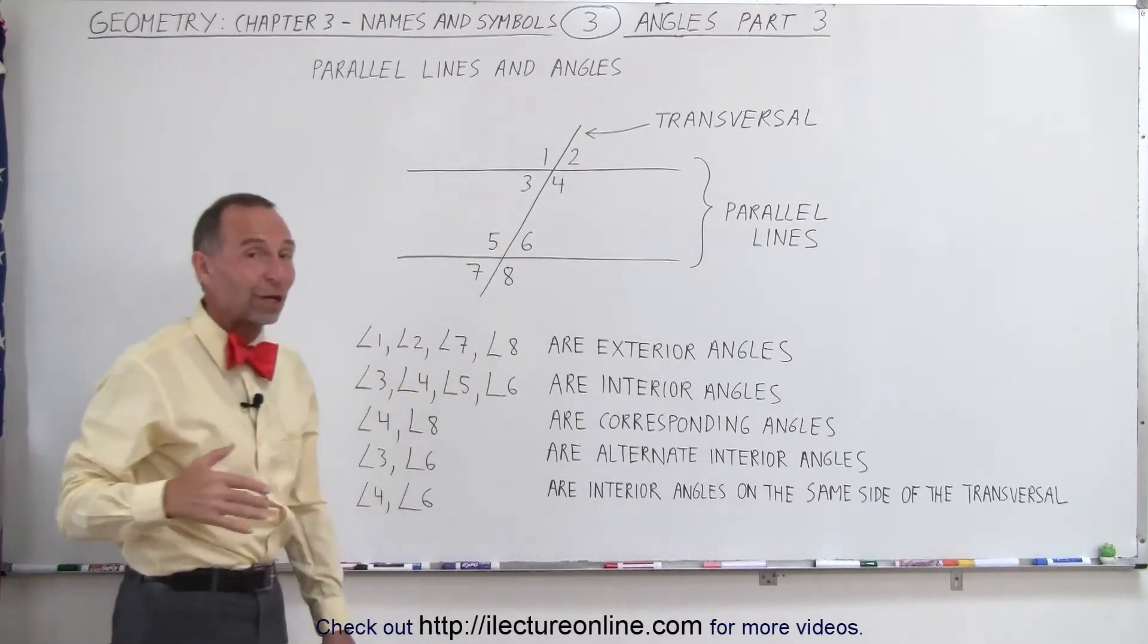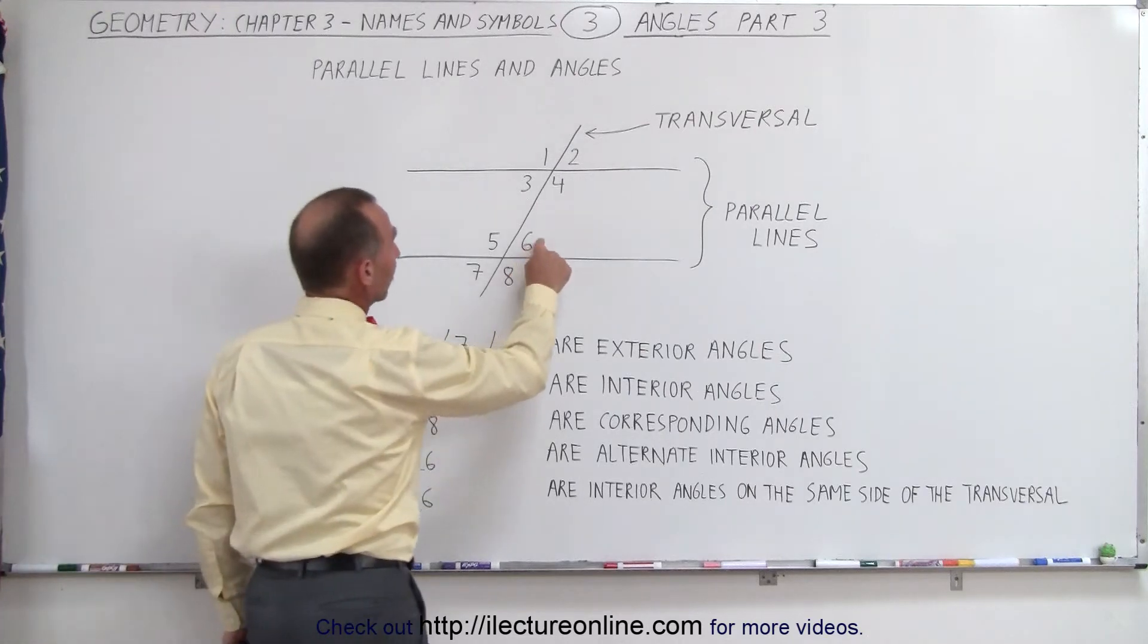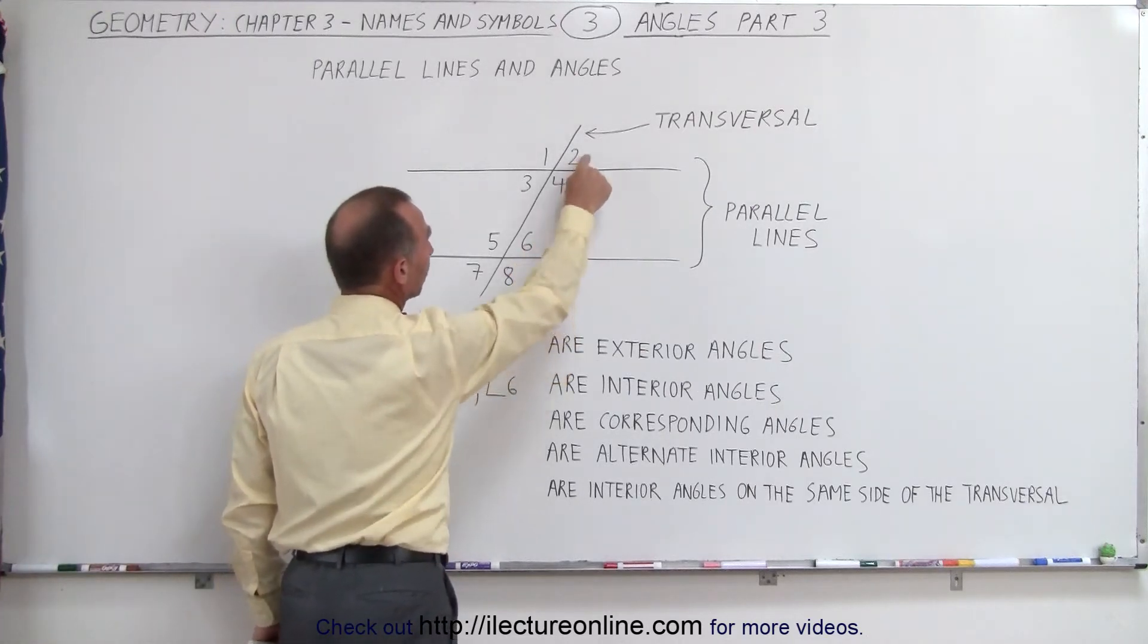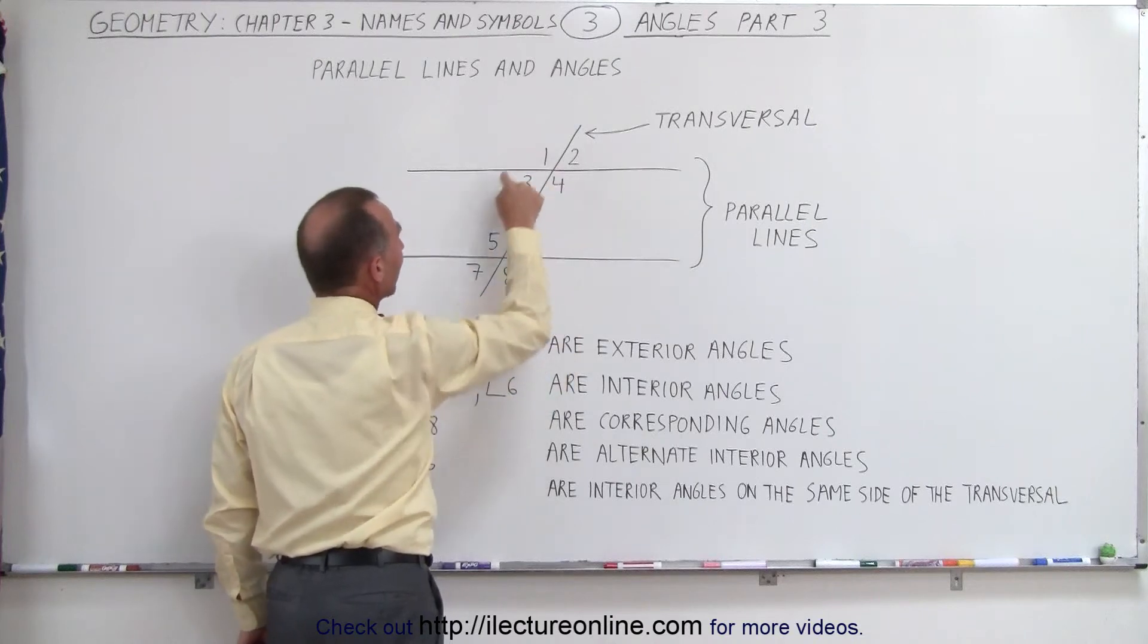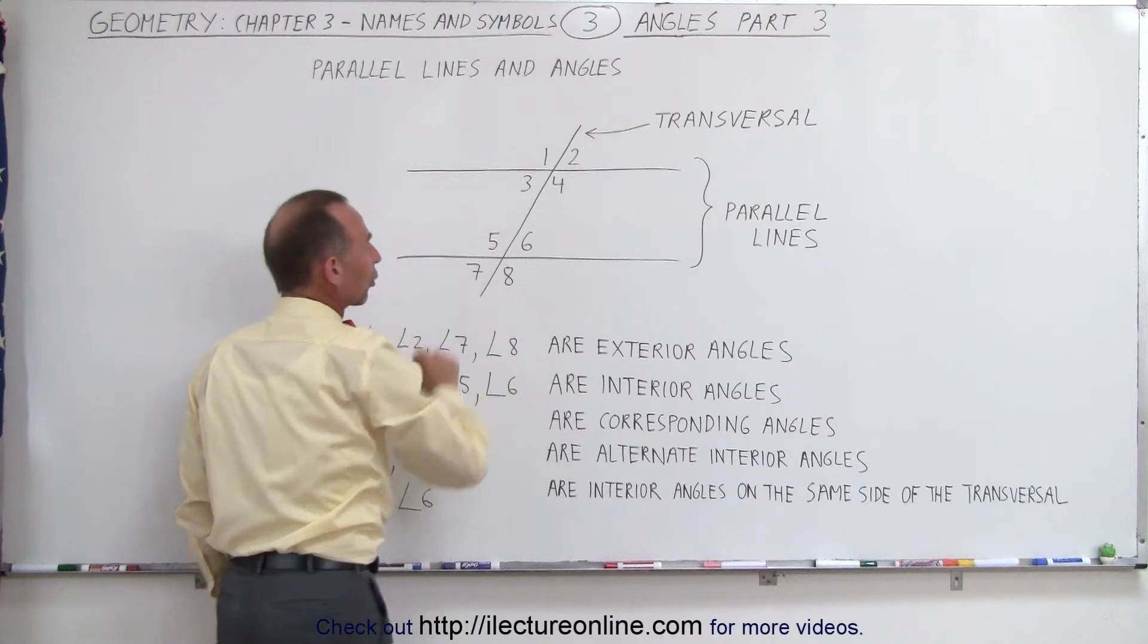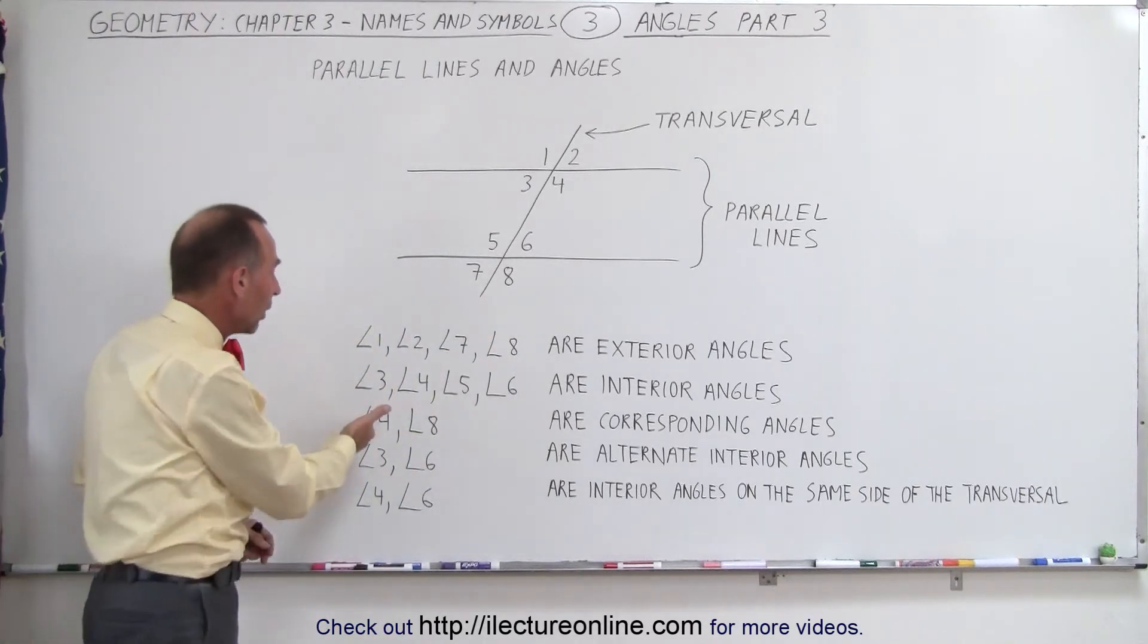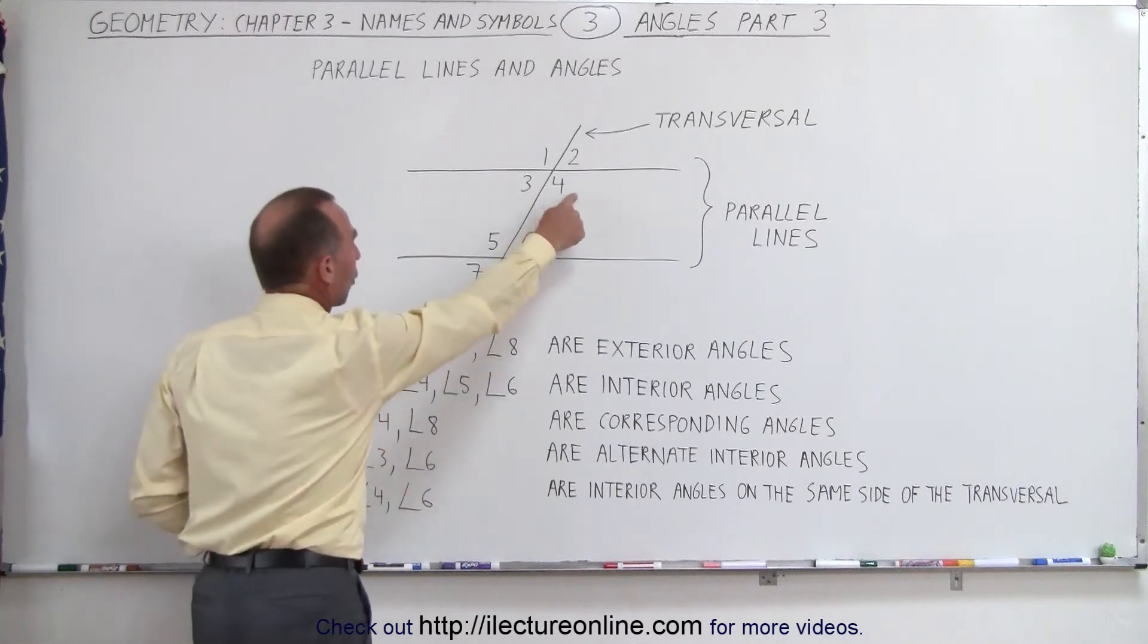It turns out there's three other pairs of angles that are corresponding angles. For example, six and two are also corresponding angles, one and five are corresponding angles, and three and seven are corresponding angles. So we have four sets of corresponding angles with one example here on the board: four and eight.